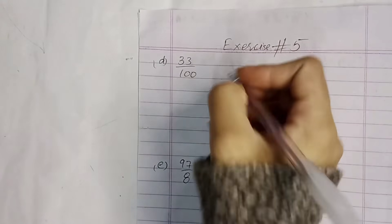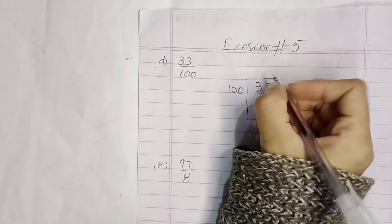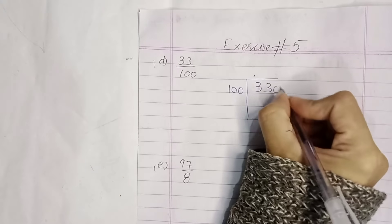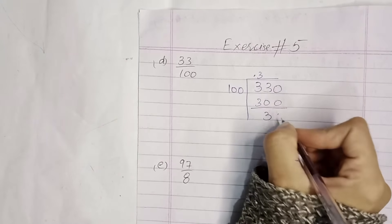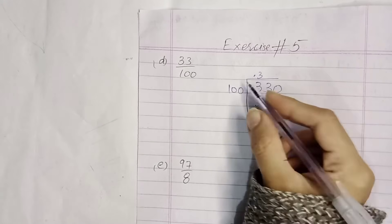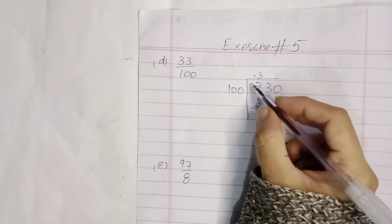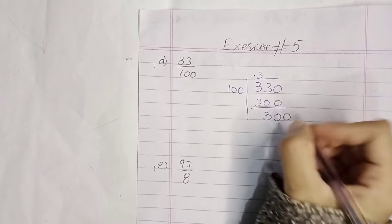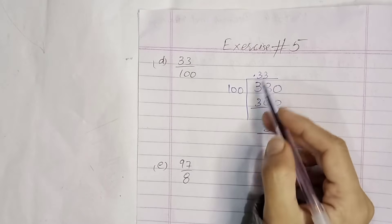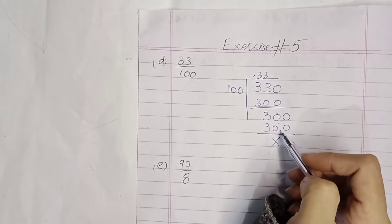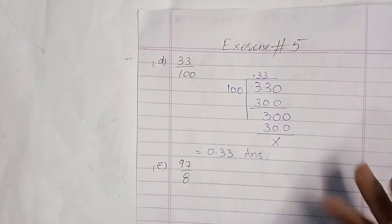Now part number D: 33 divided by 100. We add 0 to get 300, then 30, then add 0 again — 300 and 300. This is very simple, and our answer is 0.33.